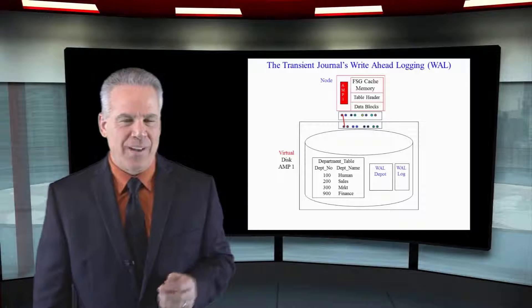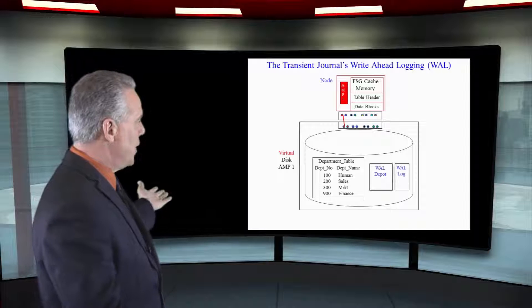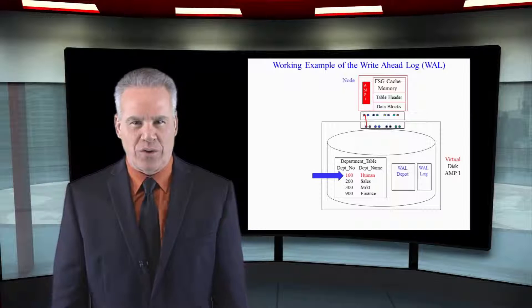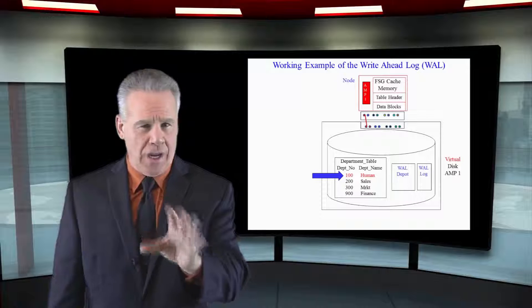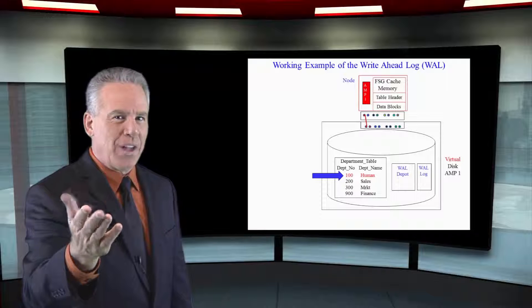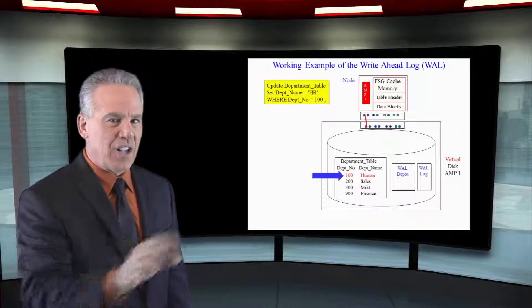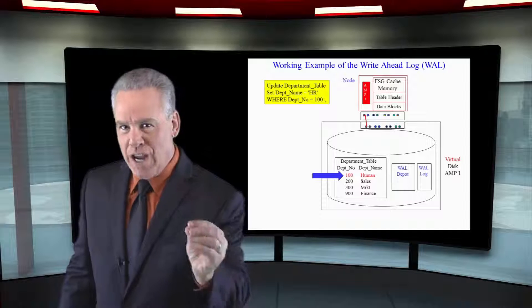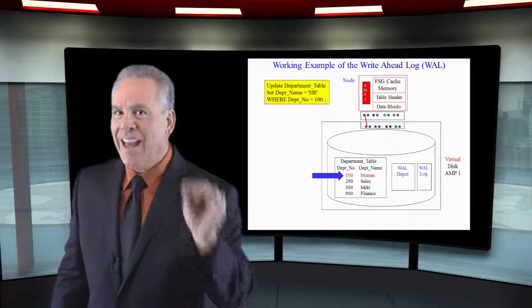In this amp we have a row that's called human. It's actually the department human resources and management has come back and said I don't like the name human as the department name. We're going to name that HR. So the update statement says I want you to update that row and change that name to HR. Not human, HR.